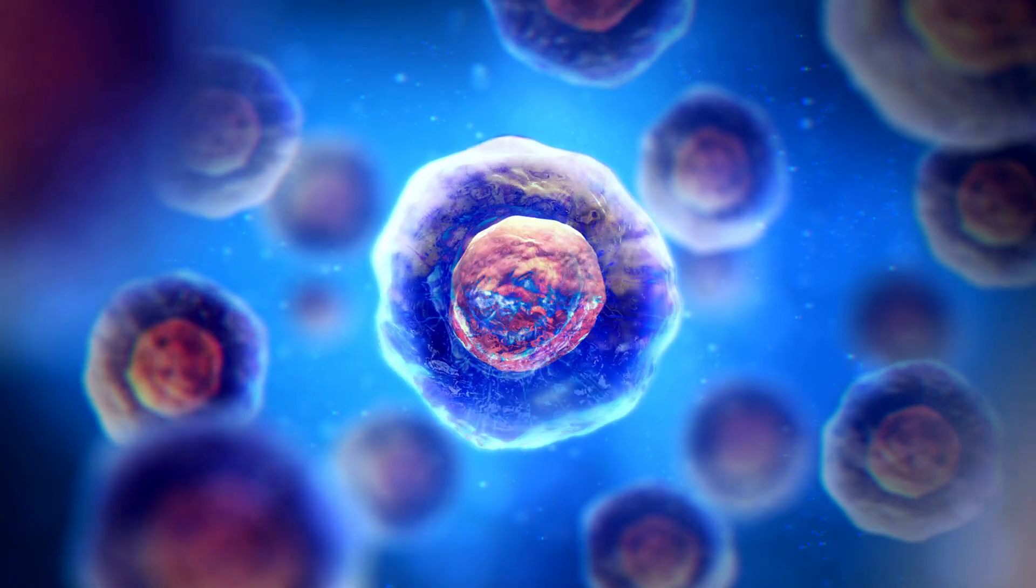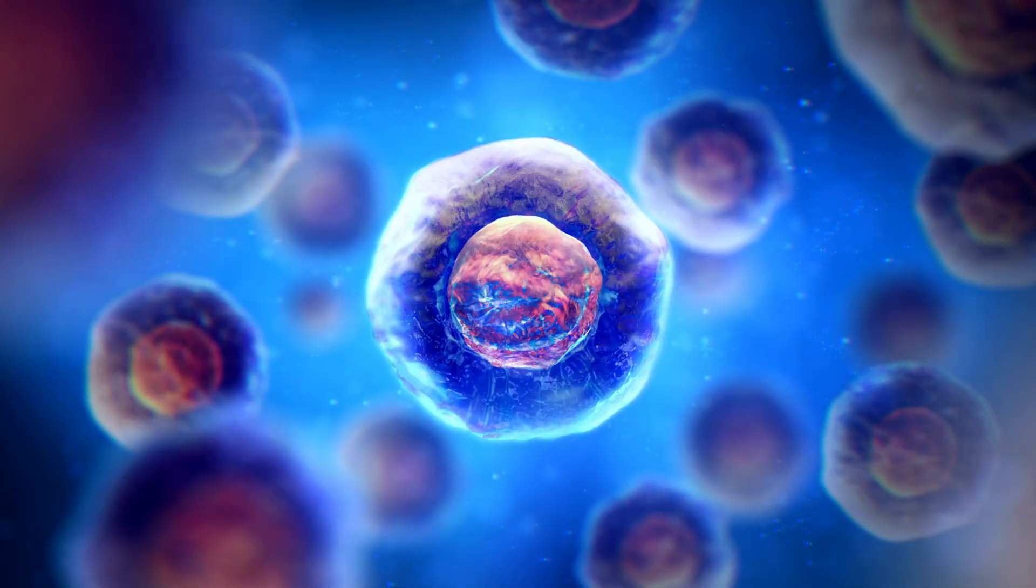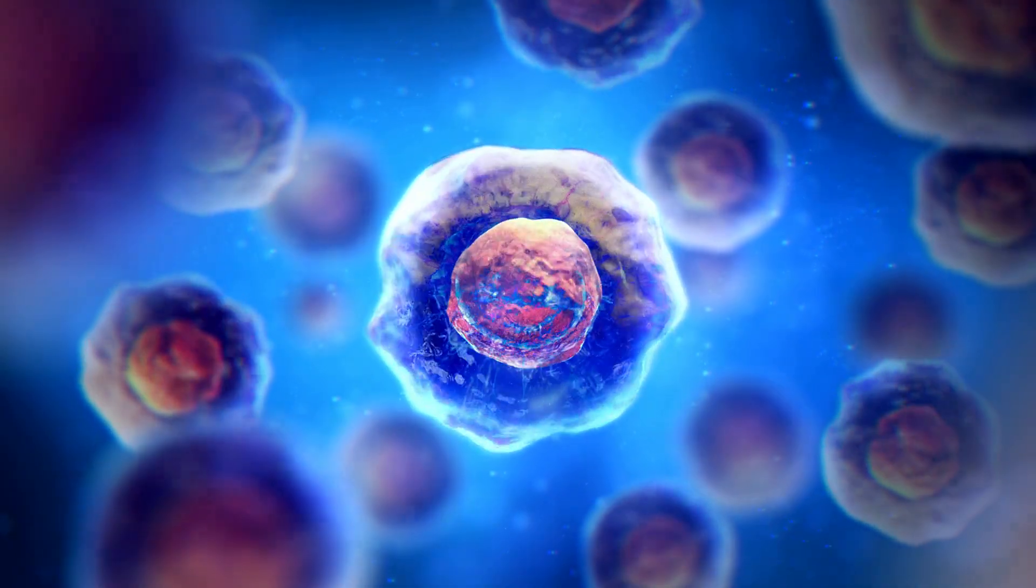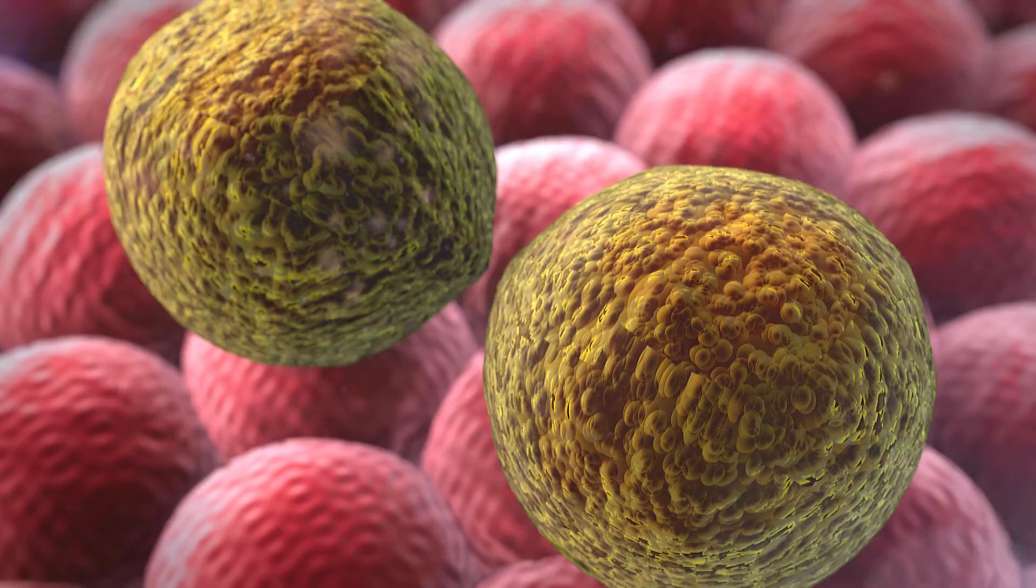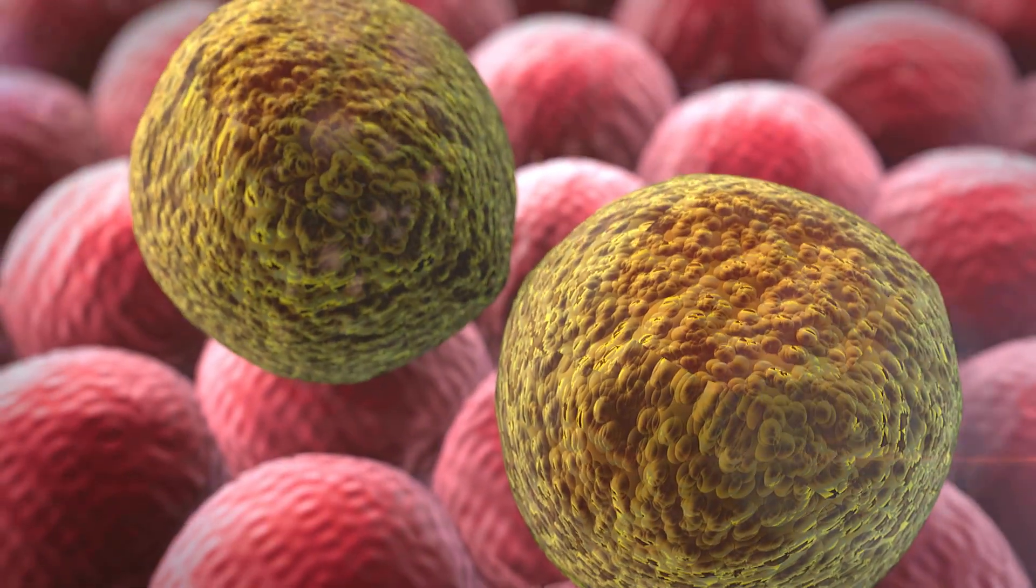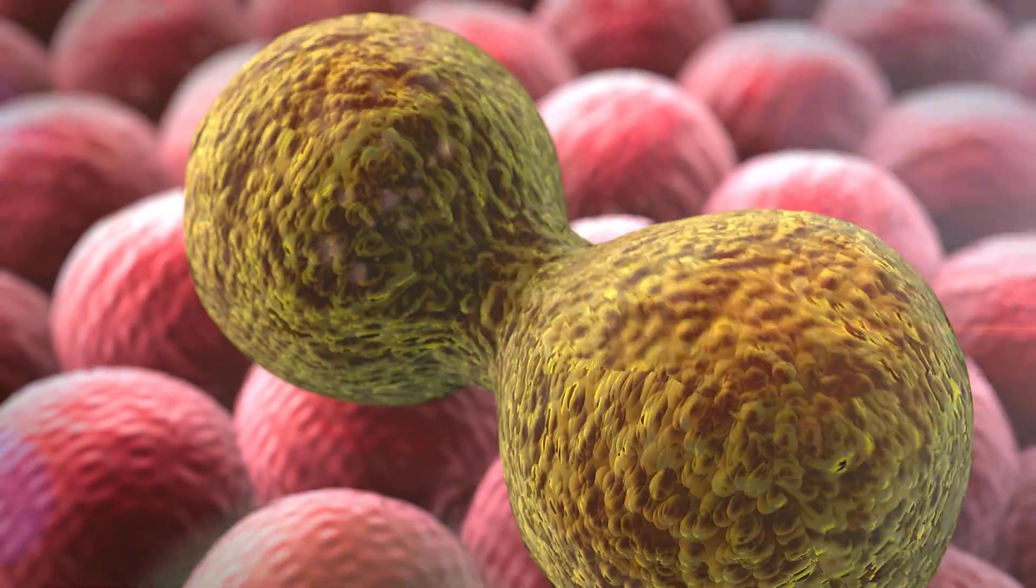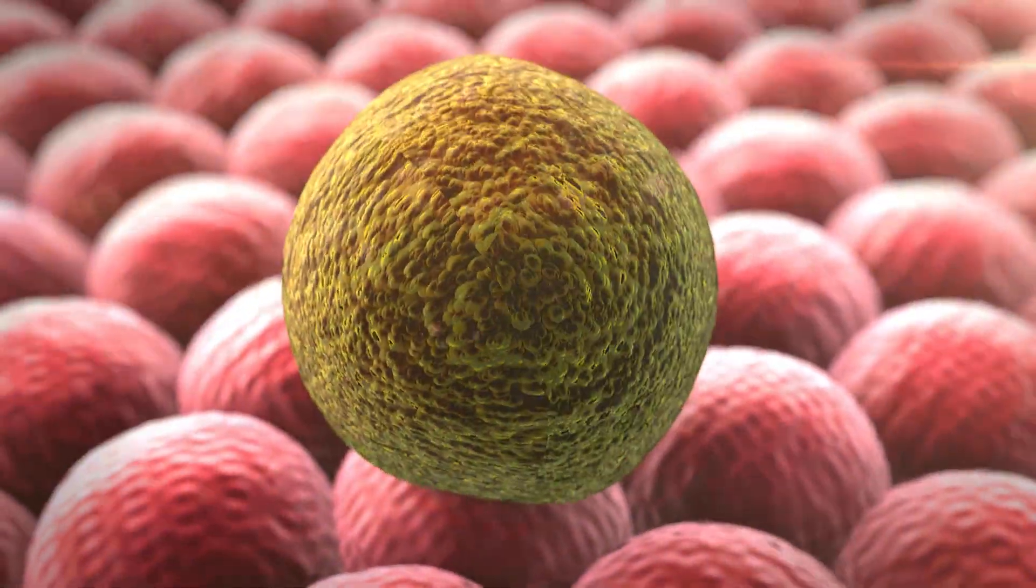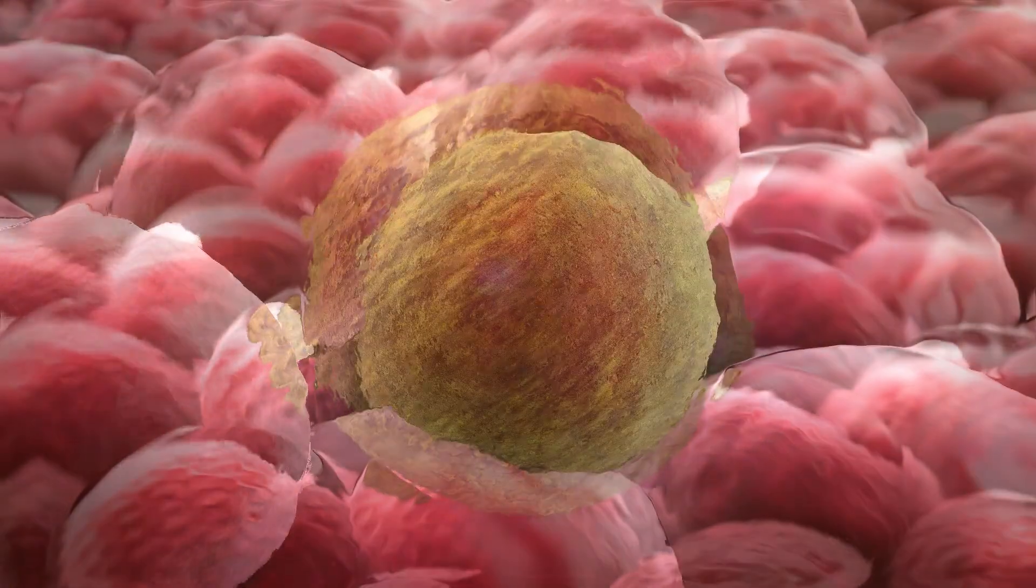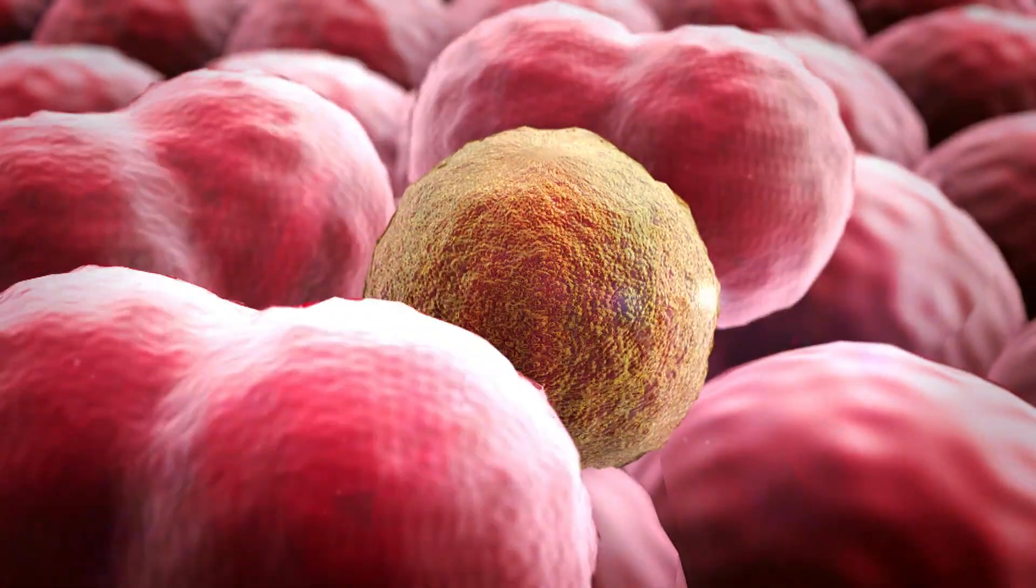When most animals grow old, their cells decay. But when the immortal jellyfish is damaged, starving, or dying, it performs a miracle of biology. It reverses its life cycle. It turns its cells back into their earliest form, reverting to a tiny polyp, its baby stage, and begins again.